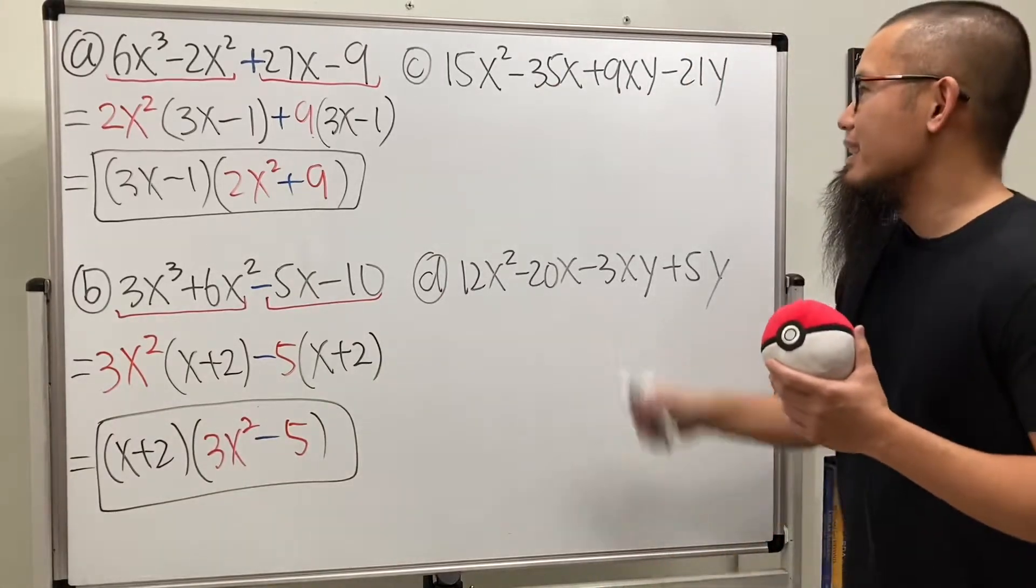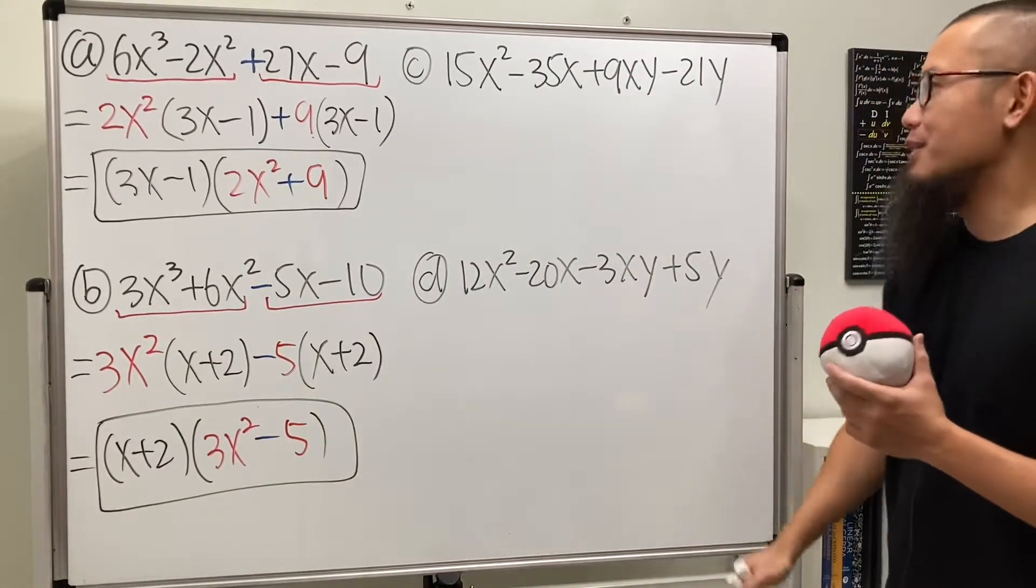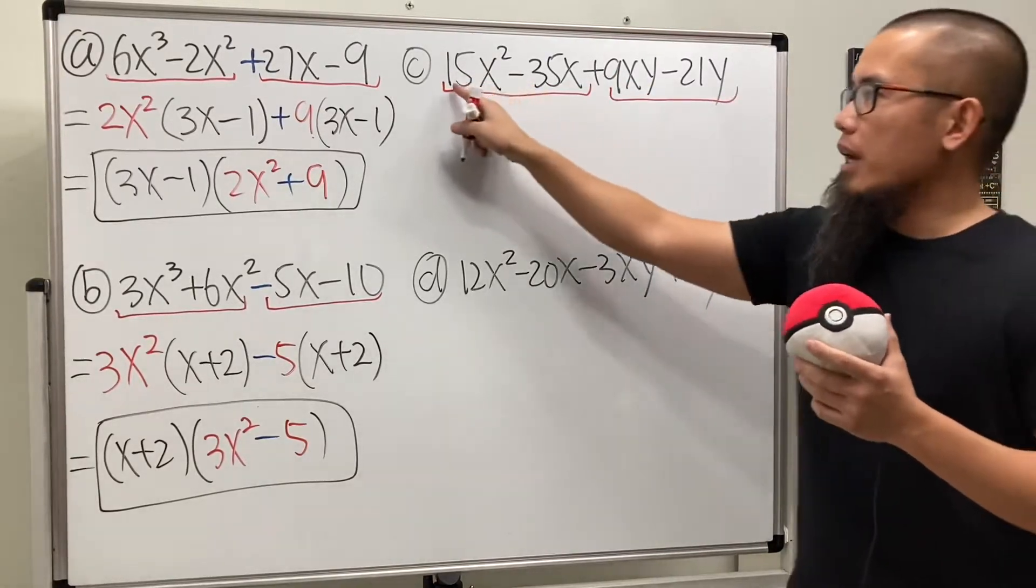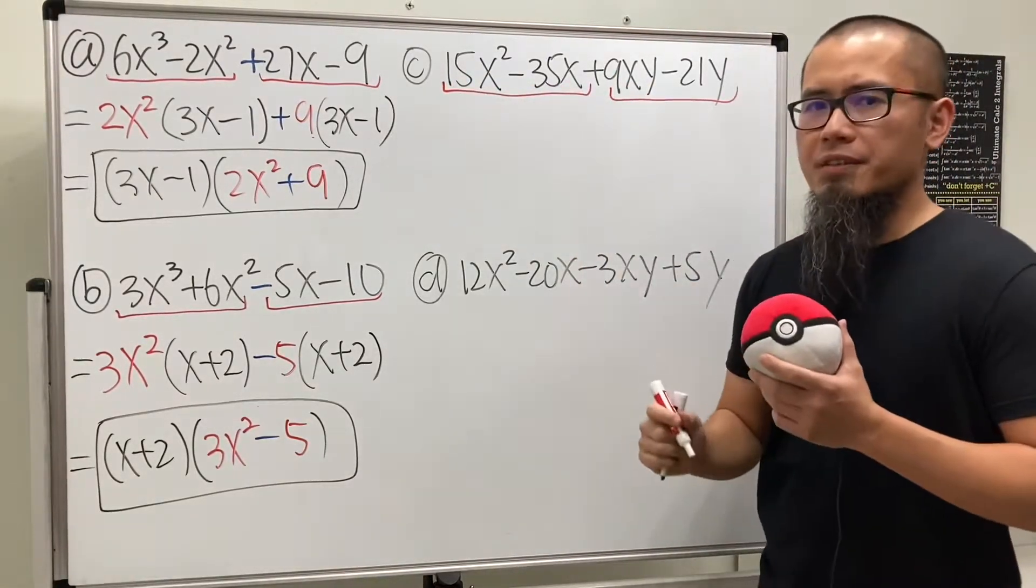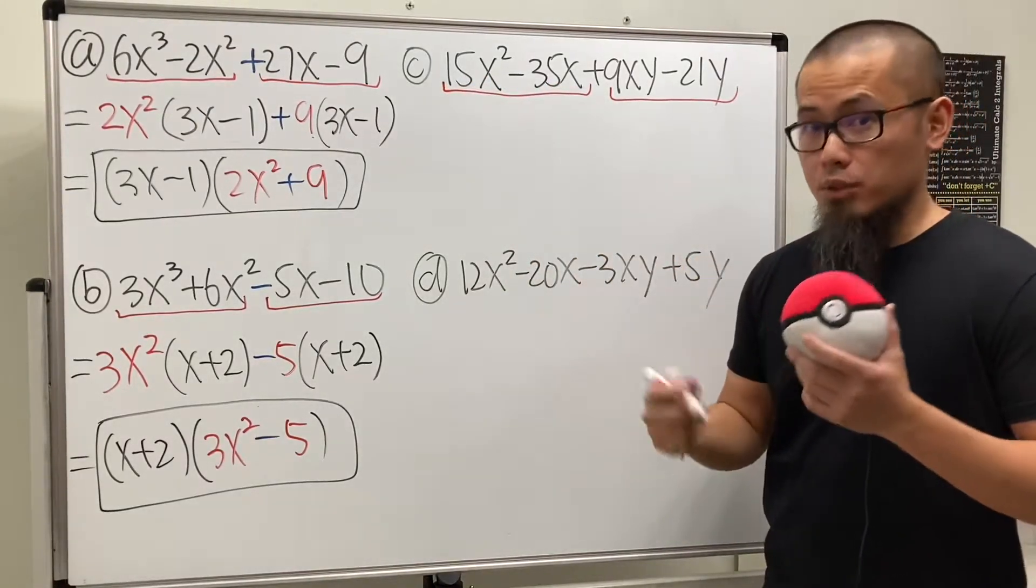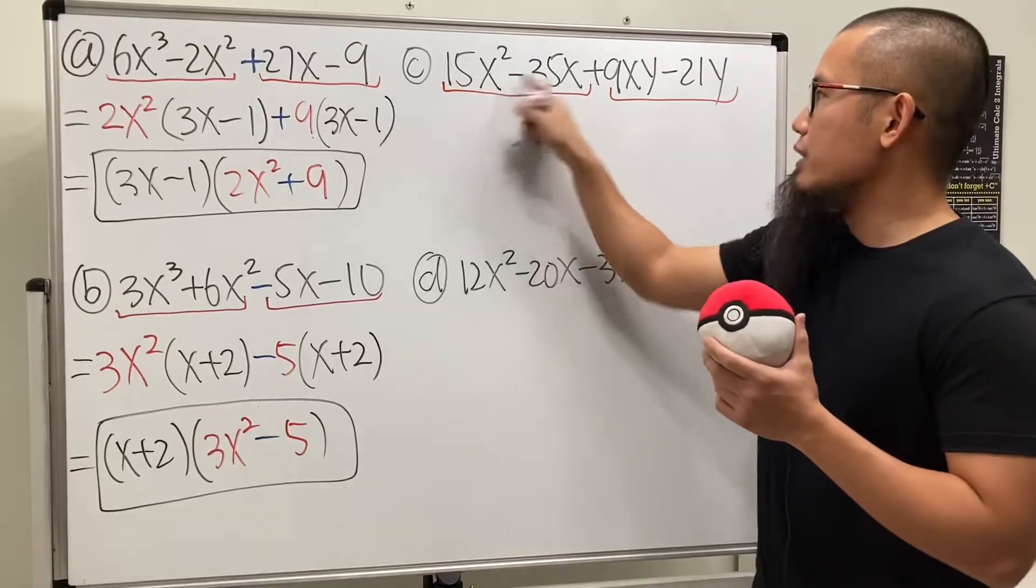All right. For this one, still no common factor. It's all right. Factor by grouping this and that. Okay. 15 and 35. 5 goes into 15 and 5 goes into 35. So we can factor out the 5.